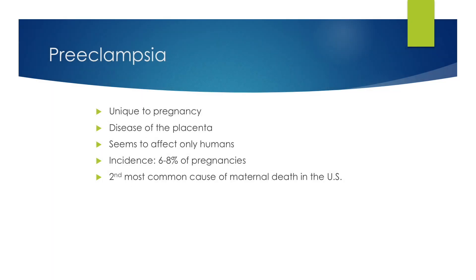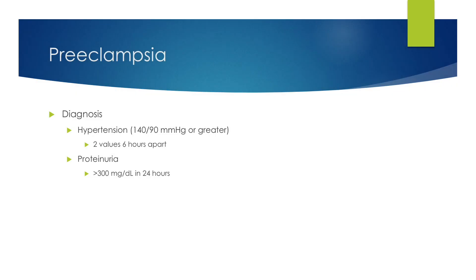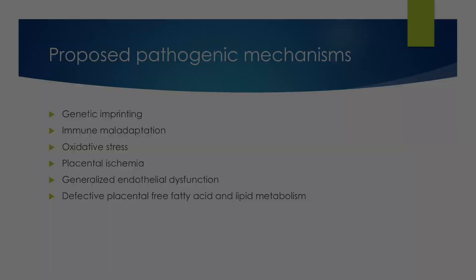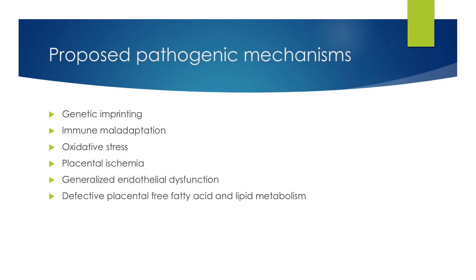Preeclampsia is unique to pregnancy, and it is really a disease of the placenta. This seems to only affect humans, and the incidence is that it affects 6-8% of pregnancies. It is the second most common cause of maternal death in the United States. The diagnosis of preeclampsia is made by documenting hypertension greater than 140 over 90 on two values six hours apart, and also new-onset proteinuria with over 300 mg of protein in a 24-hour urine collection.